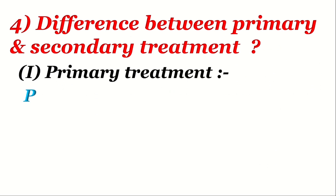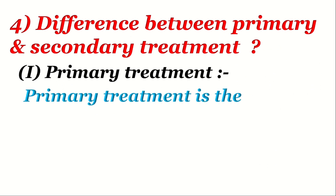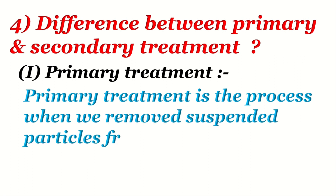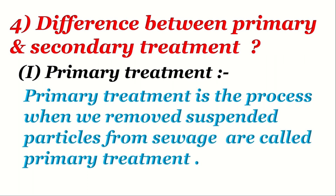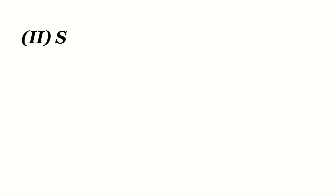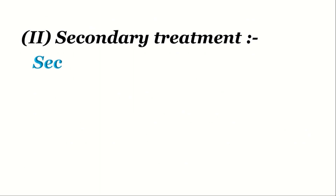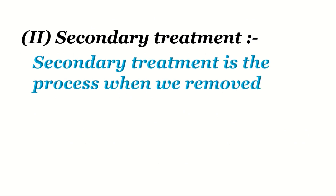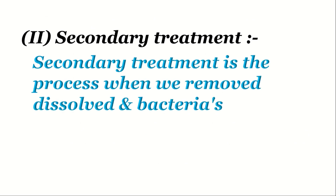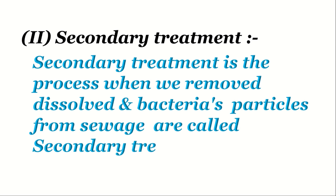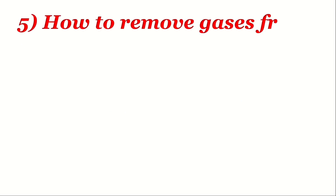Question 4: Difference between primary and secondary treatment. Primary treatment is the process in which suspended particles are removed from sewage. Secondary treatment is the process in which dissolved particles and bacteria are removed from sewage.